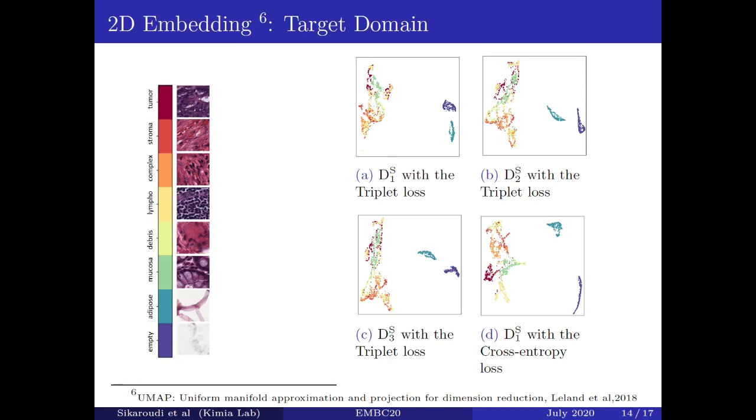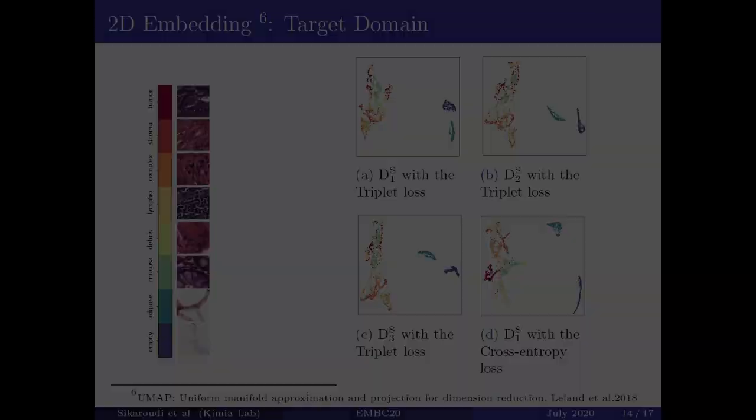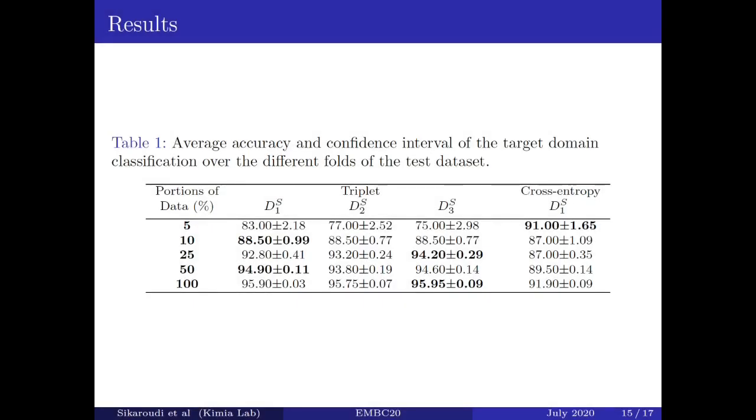Let's take a look at the accuracy of target domain classifier in the table. We can see accuracies for different portions of target domain data. As you can see, our unsupervised technique results have comparable accuracy in comparison to supervised techniques in which we've used label information for the training of our models. The interesting point is we've got the highest accuracy, which is 95.95%, using the model which was trained on gastrointestinal subset of TCGA.